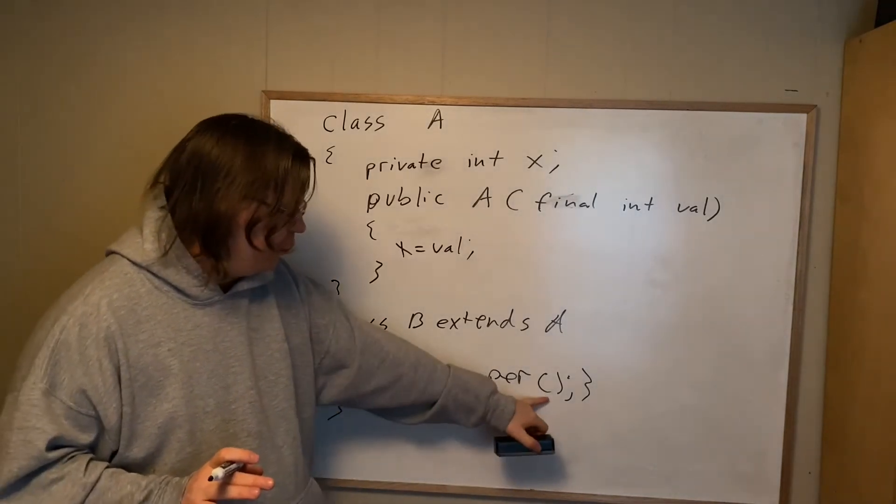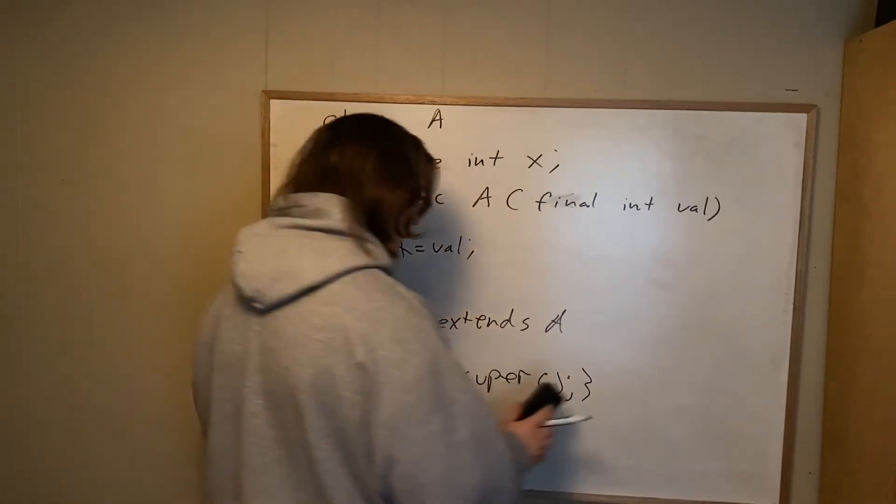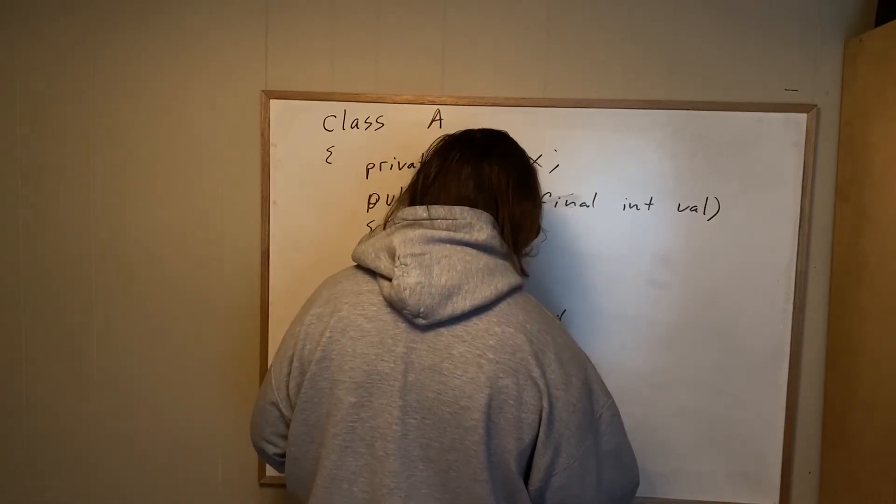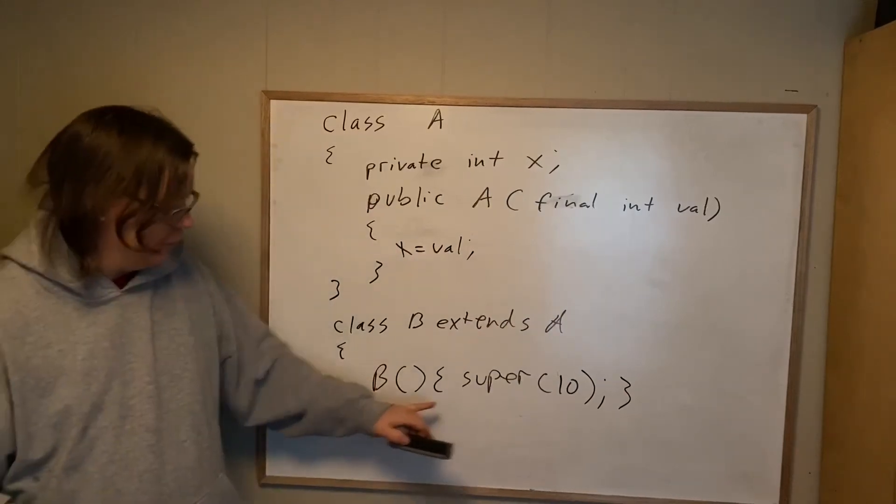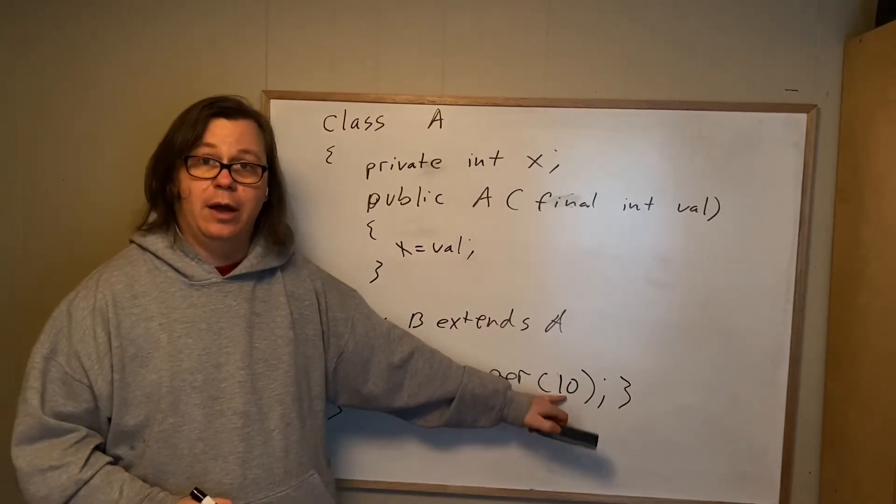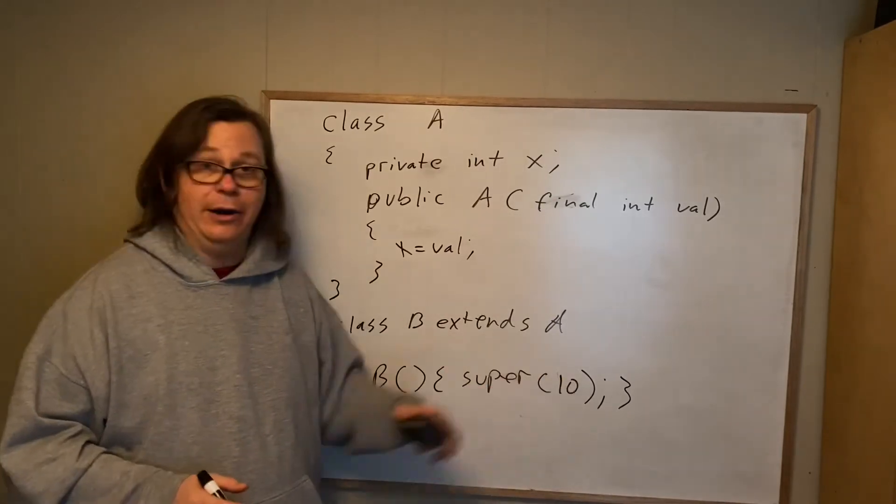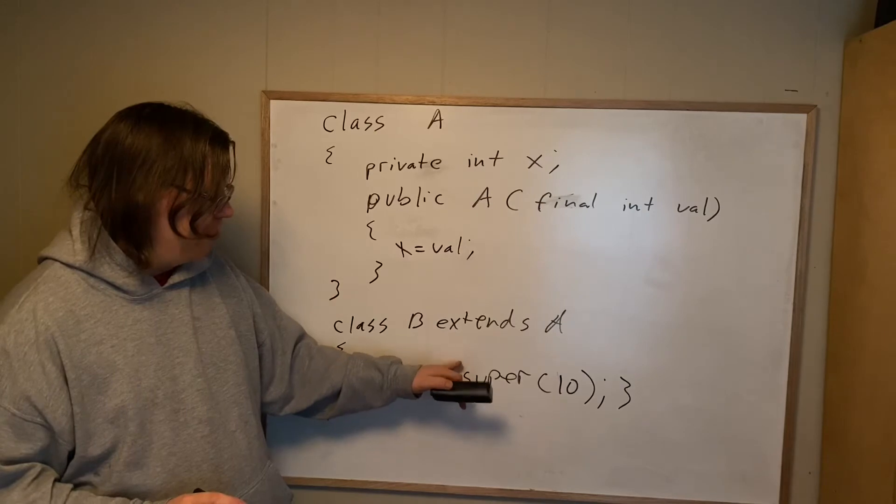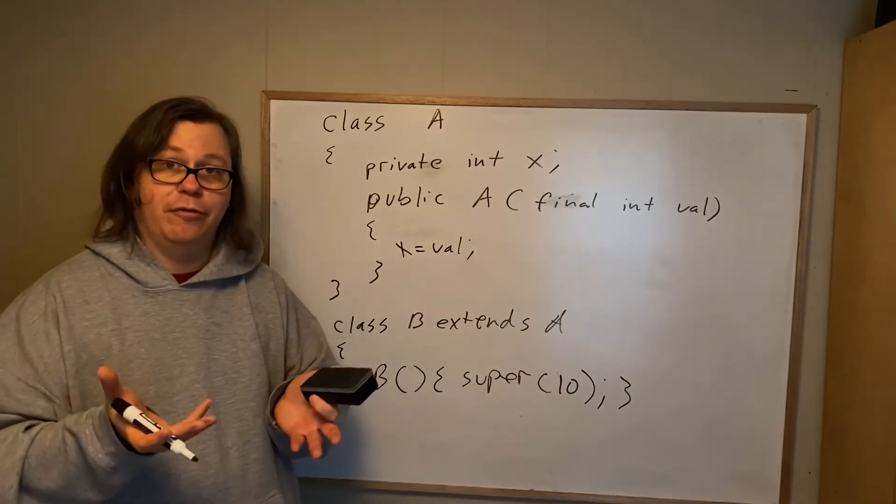That means here, when we call super passing no arguments, it doesn't work because the only constructor here takes an int. So we actually have to now go out of our way and write our own constructor that calls it with super and a value. An alternative would be to have this one take an int and pass that int in here. But at no point in time will the compiler magically call super passing in a value.